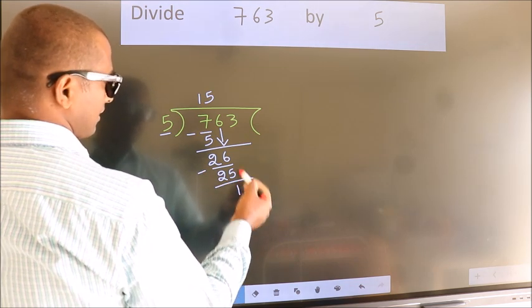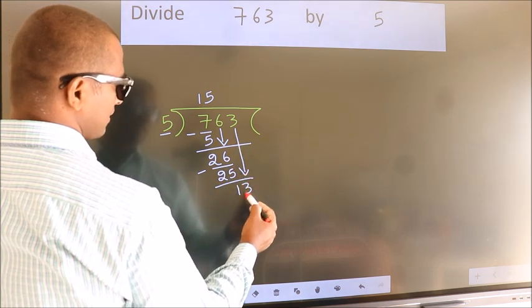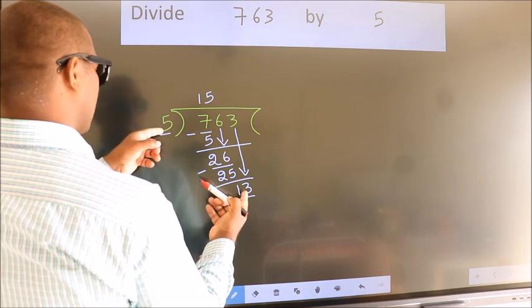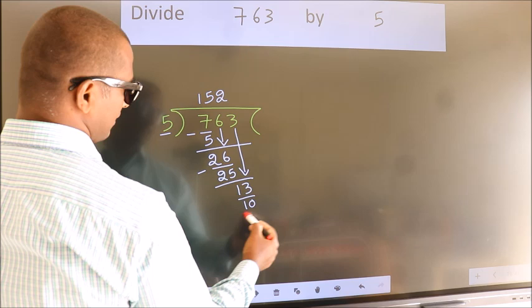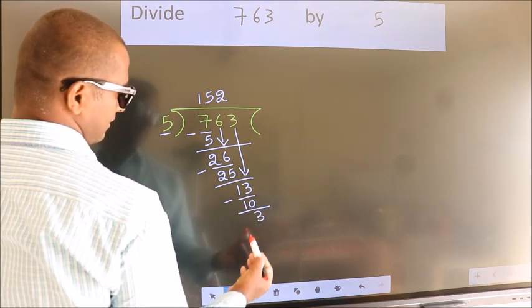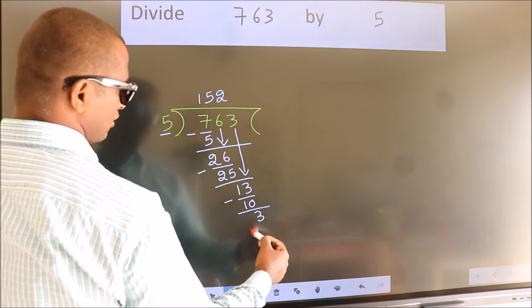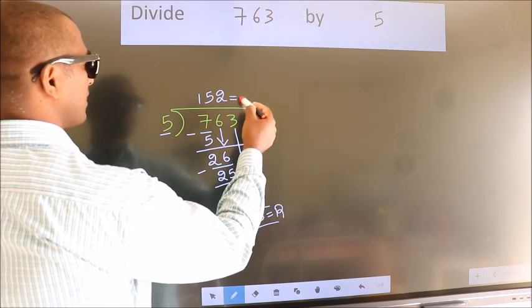After this, bring down the beside number. So 3 down. So 13. A number close to 13 in 5 table is 5 2s 10. Now we subtract. We get 3. No more numbers to bring it down. So we stop here. This is our remainder. This is our quotient.